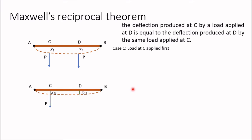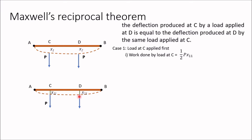In this case, the work done by load P at C is half P times X11. This is load times deflection — force times deflection is the work done. But this force is applied gradually, meaning it is increased from 0 to P gradually. Therefore, we take half of P, giving work done equal to half P times X11. Next, apply P at position D.